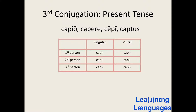Here is capio, another IO-variant verb. Pause the video and try to conjugate it in the present tense. Here are the answers: capio — I capture; capis — you singular capture; capit — he, she, or it captures; capimus — we capture; capitis — you plural capture; capiunt — they capture.